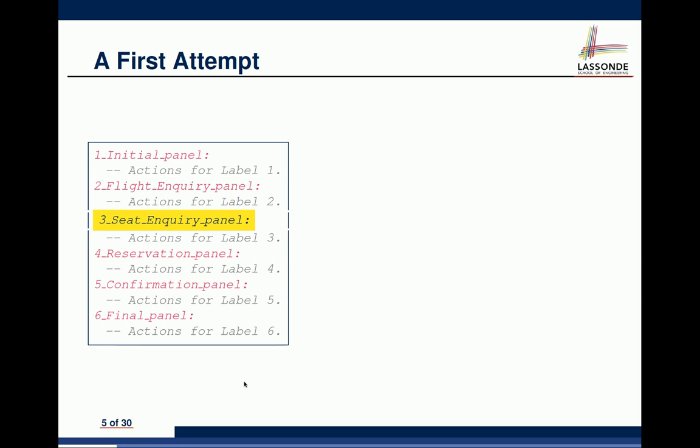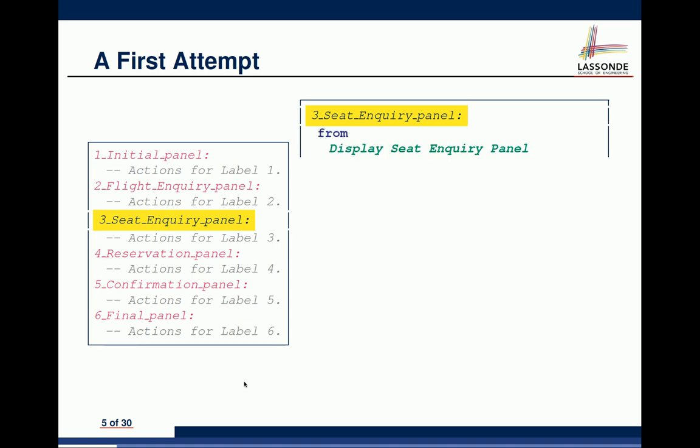Let's look more deeply at how each section is defined. Think about how you would define the other five states — would they be very similar or very different? For state number three, it's basically like a label in GoTo from assembly language. For every state, we display state-specific information — for example, 'you are now in the seat inquiry panel, please enter departure and return dates.' There might be some state-specific information to display.